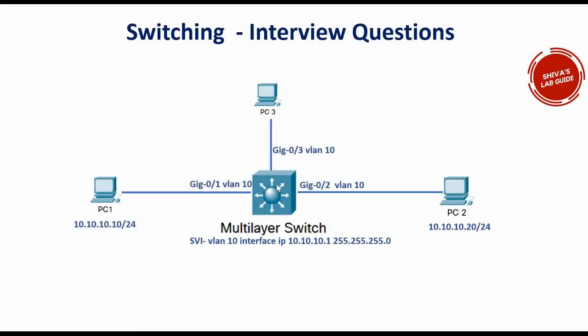So the question is: this is a Layer 3 switch and all its ports are access ports — when the packet comes in, how does the switch decide when to do Layer 2 switching and when to do IP routing? From PC1 to PC2, the switch does Layer 2 switching. From PC3, the switch sends an ICMP reply because the packet arrived for its own interface and it performs Layer 3 routing.